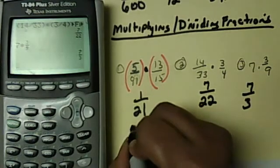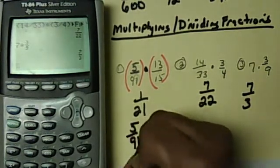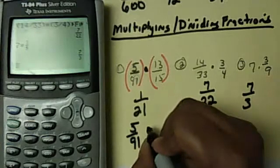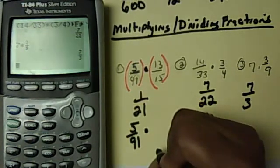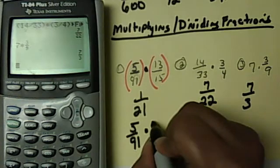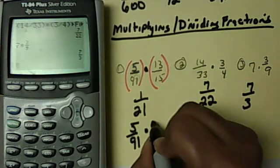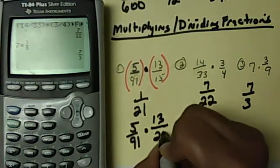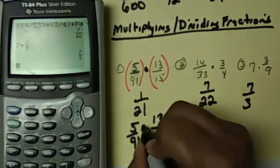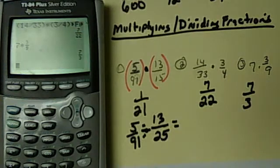Let's say if I wanted to do, and I keep it the same, 5 over 91, right, times, let's say, 13 over 25. Just make, I mean divided by, 13 over 25. Something like that.